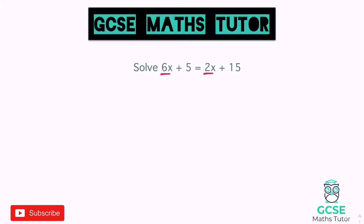It's just going to avoid having any negatives, so I look for which is the smallest value of x and just get rid of that from both sides. So I'm going to subtract 2x on both sides of the equation. Take away the 2x and we have 4x plus 5, and that now equals positive 15 over there, so I'll just leave that as 15.